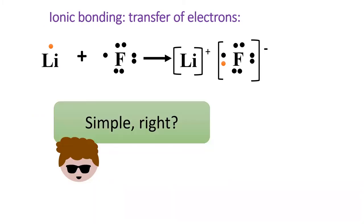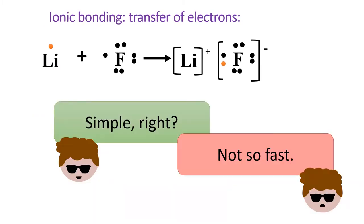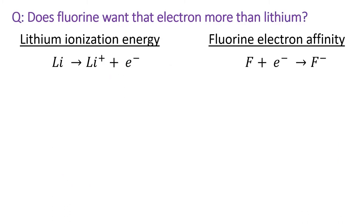Pretty simple, right? Well, maybe not. Let's take a closer look. Remember in sections 7.4 and 7.5 we defined two terms that make ions: ionization energy and electron affinity.